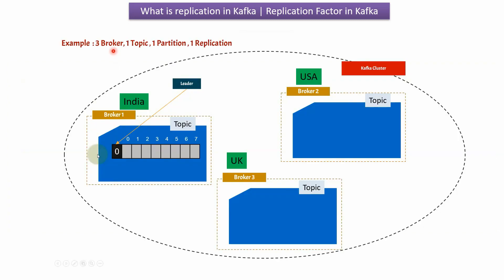Here we can see the example of three brokers, one topic, one partition and one replication. The Kafka cluster has three brokers: Broker 1 running in India, Broker 2 running in the USA, and Broker 3 running in the UK. The same topic is replicated in Broker 2 and Broker 3, and it has one partition — Partition 0. Since there is only one replication, the partition is available in Broker 1 only, and it acts as a leader. There is no follower because it has only one replication.